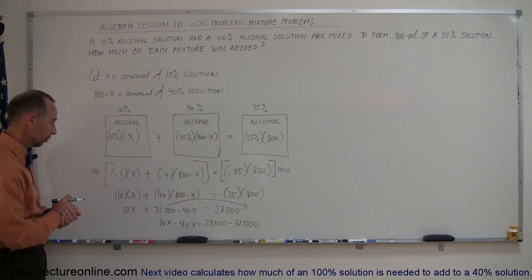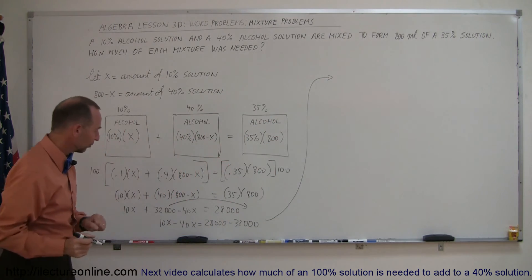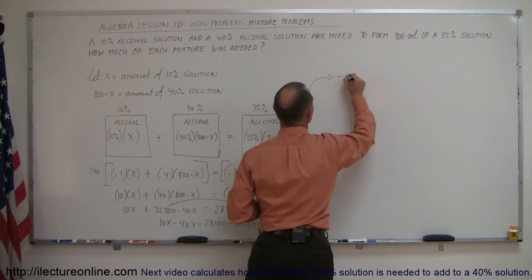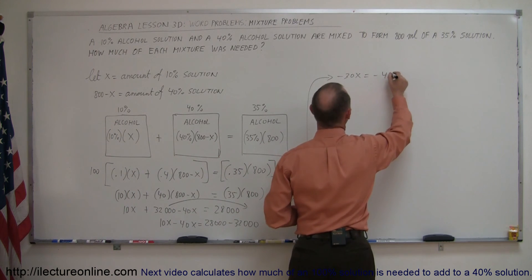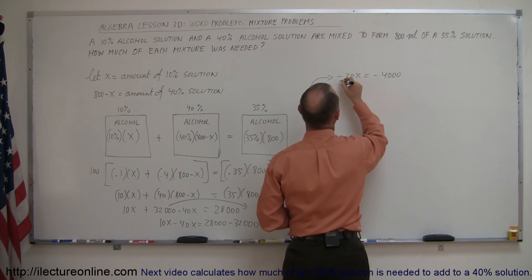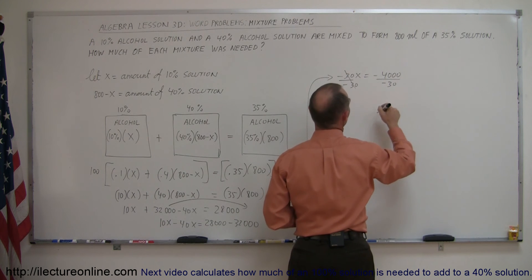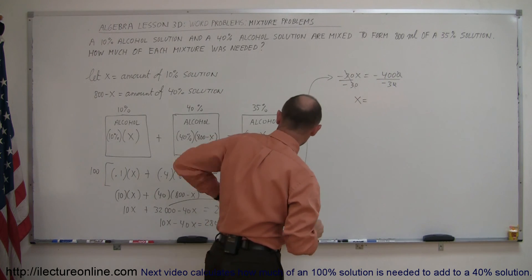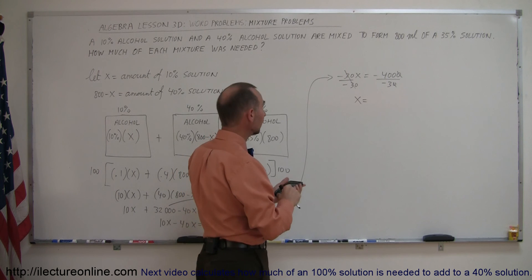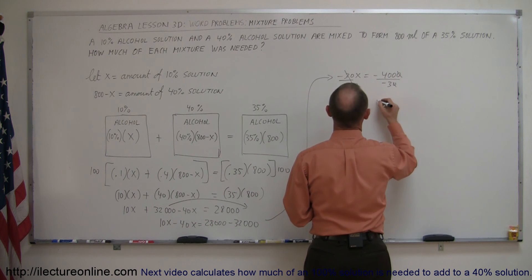Now combine like terms on both sides. 10x minus 40x gives minus 30x, and 28,000 minus 32,000 gives minus 4,000. Dividing both sides by minus 30, the zeros cancel, and x equals 4,000 divided by 30, which is 133 and a third. So x equals 133⅓ milliliters.